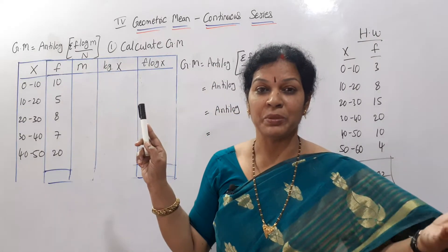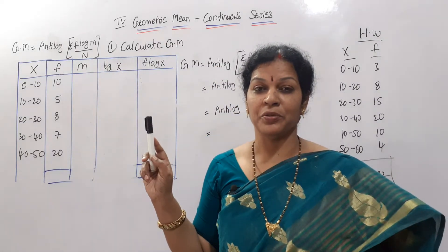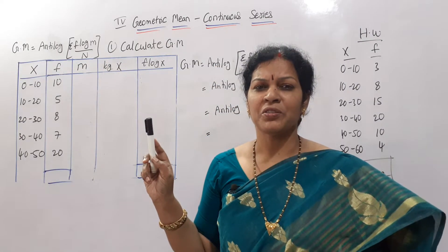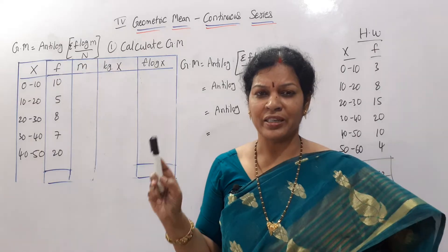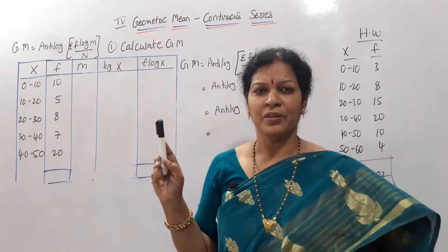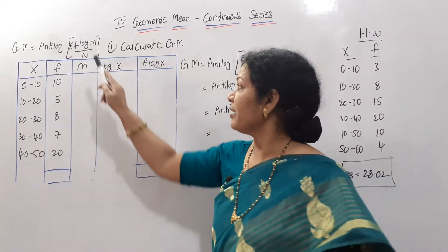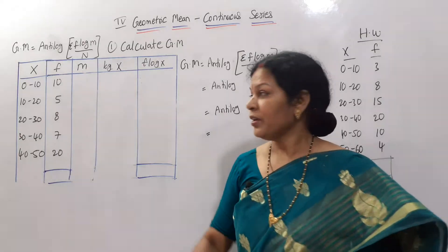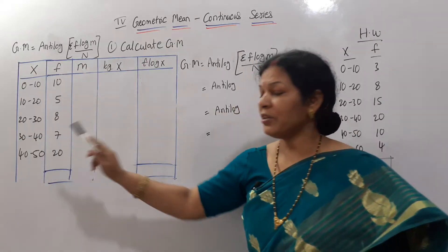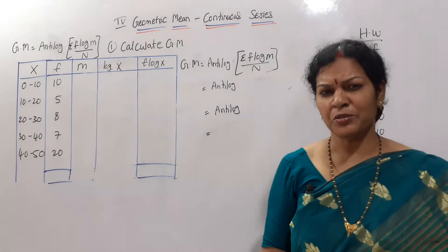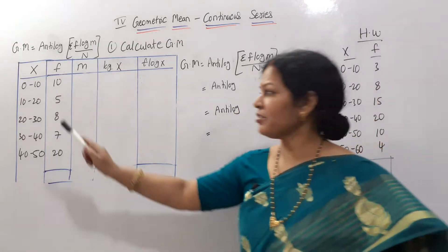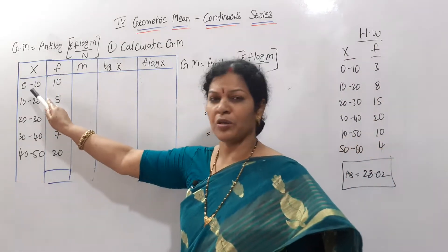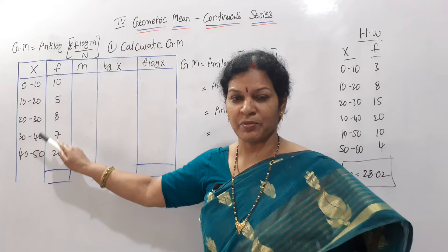Say it along with me so it will be easy for you. What is the formula? Anti-log of sigma f into log m by n. Now a problem is given to us. In continuous series, x is always given as a class interval.